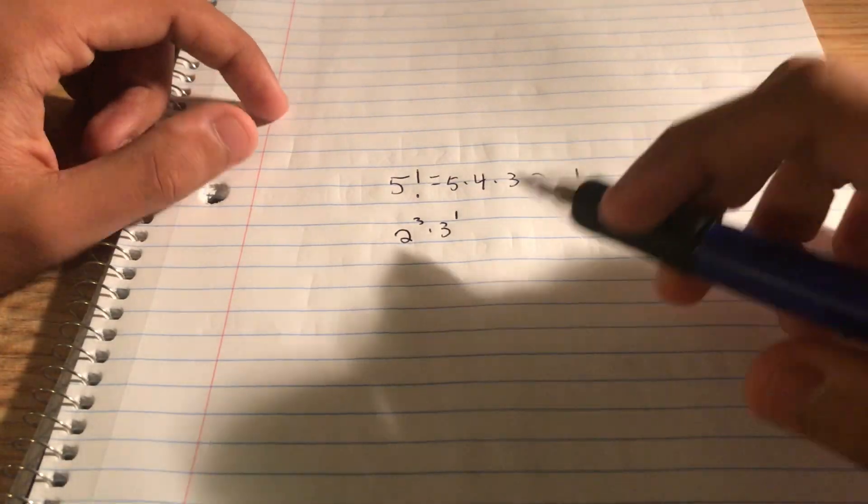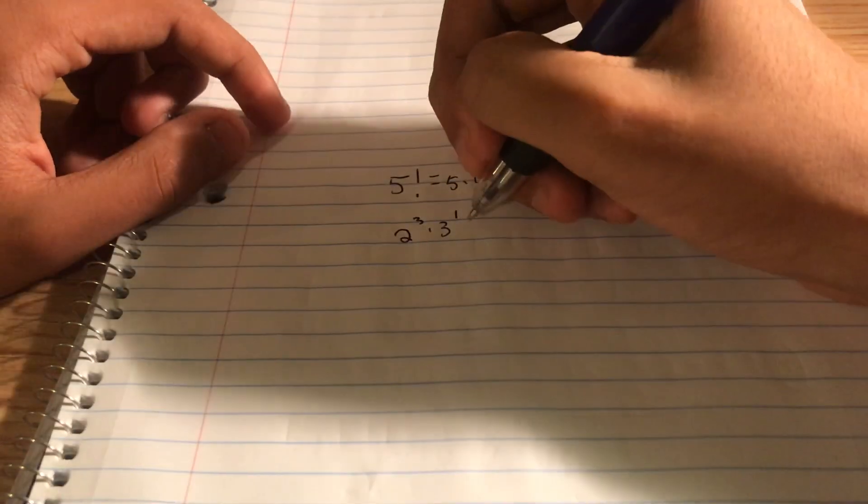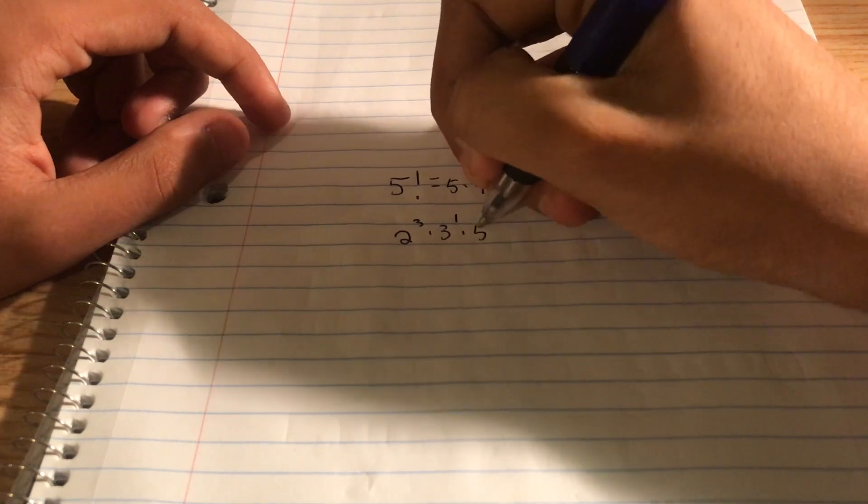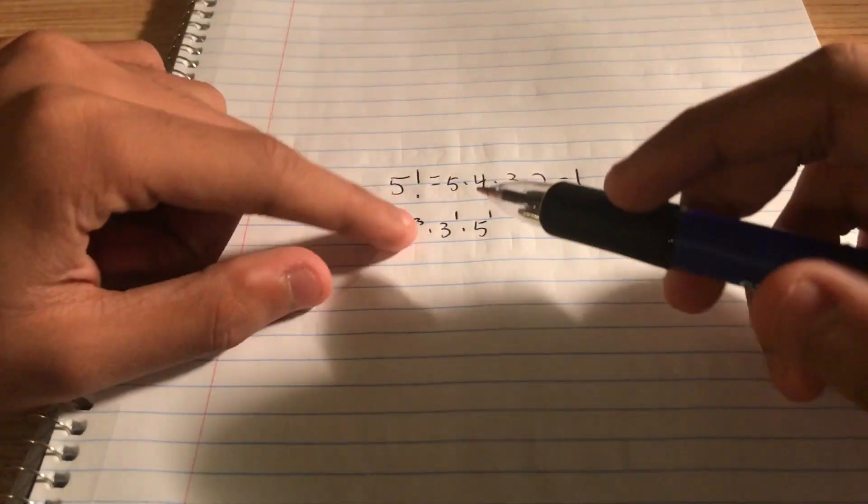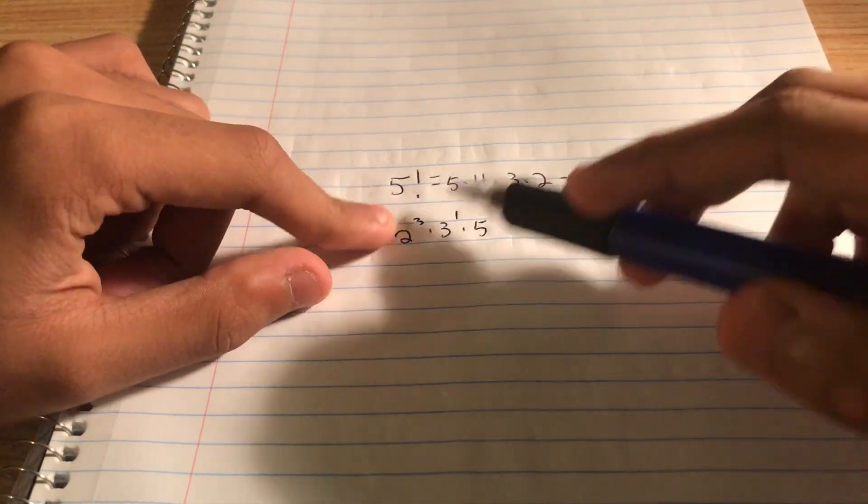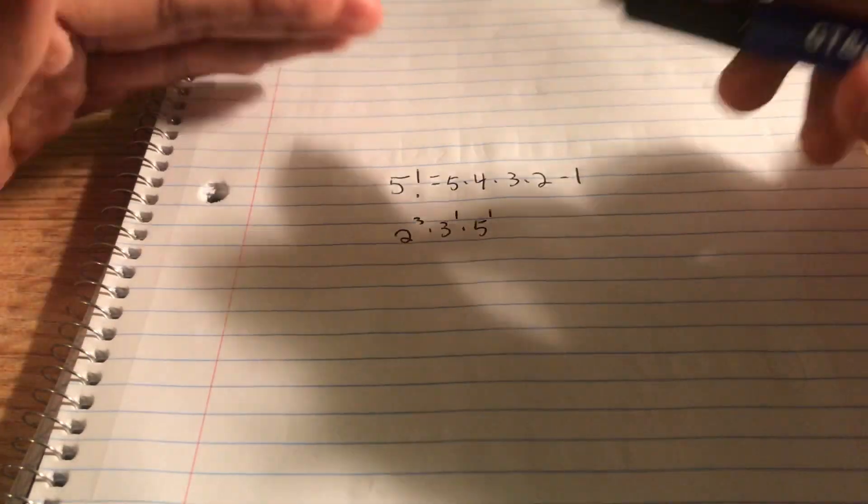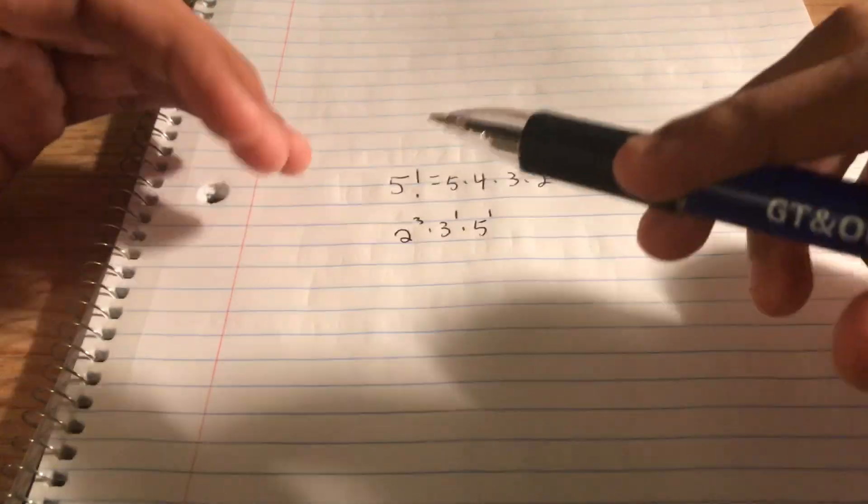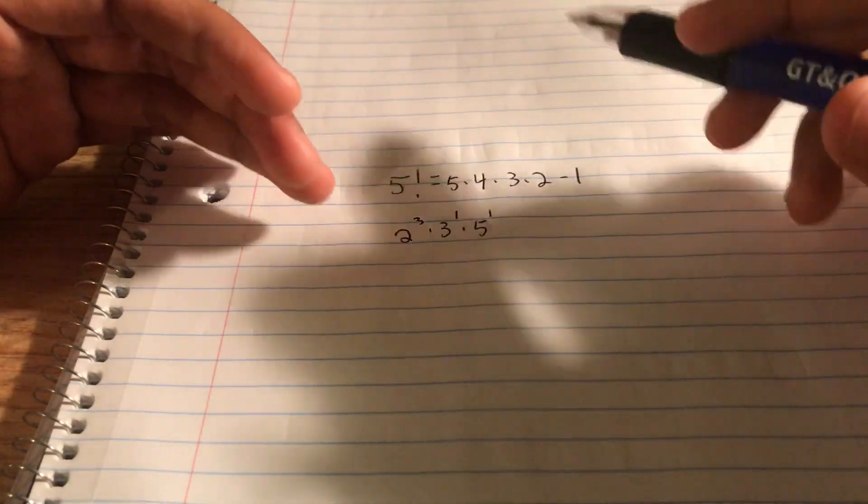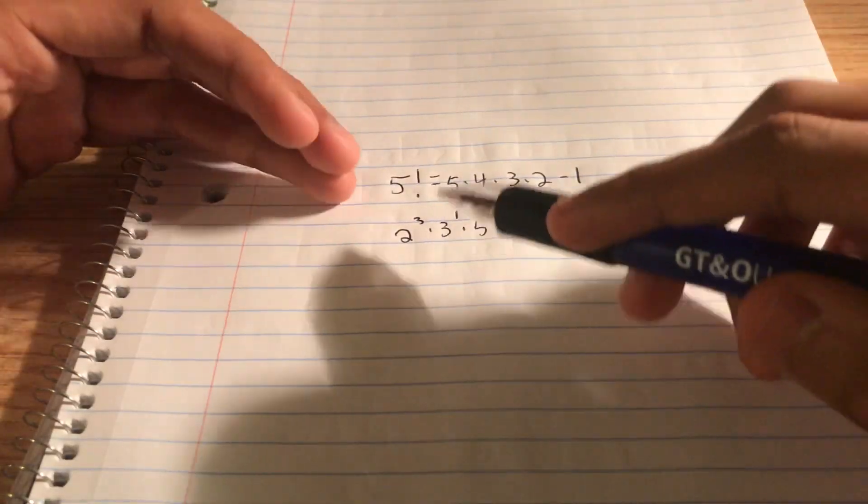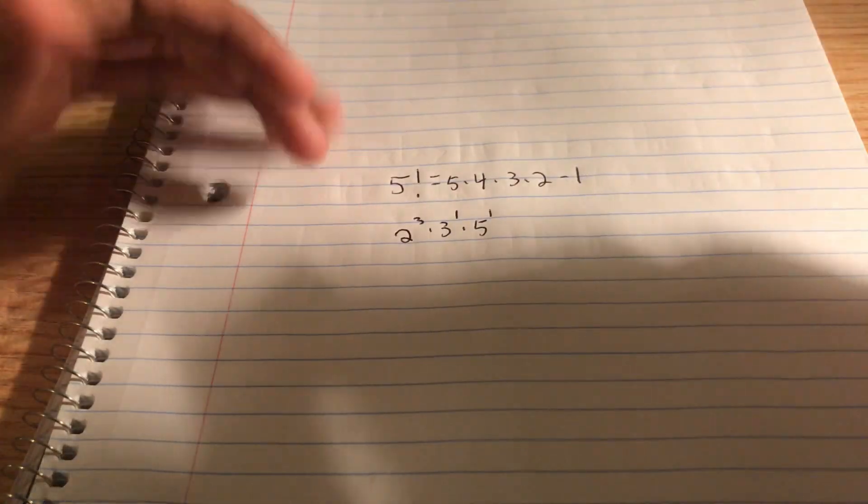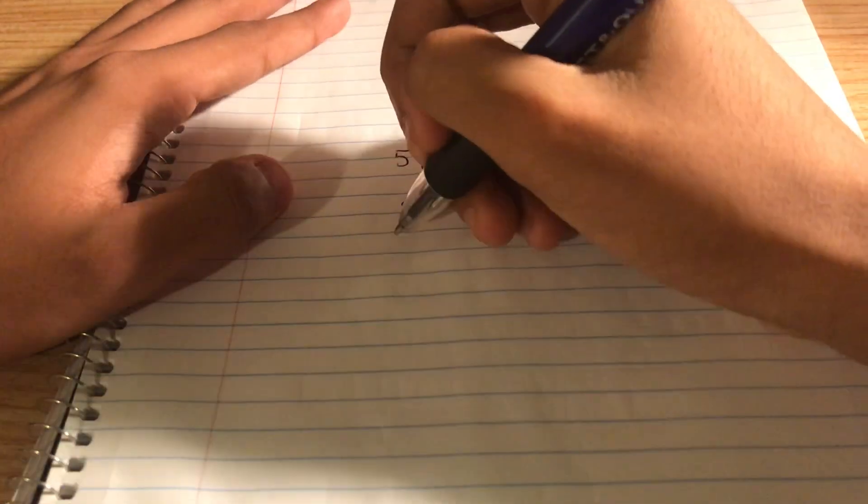And finally, the next prime is 5. There's 1 five, so 5 to the power of 1. That's how you prime factorize 5 factorial. Just a heads up: what I did there was that I went through every prime number, starting with 2, then going to 3, then 5, and then finding the powers of that prime number within the factorial. Let's go to a bigger example.